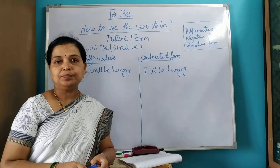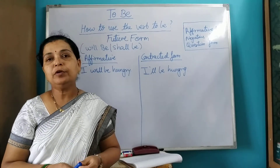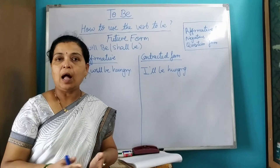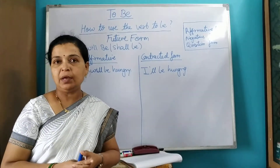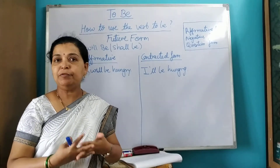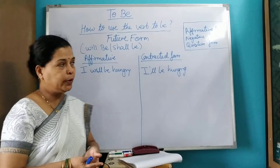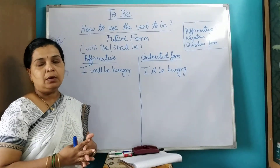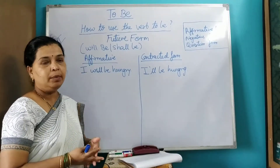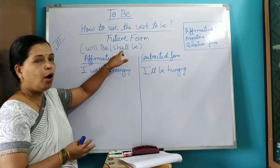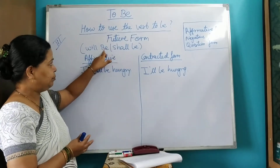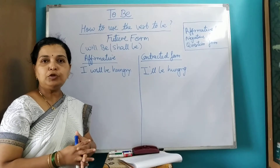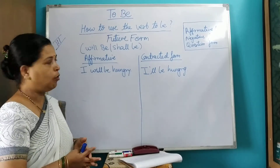Hello everyone, today we are going to see the verb 'to be' and how to use the verb 'to be' in the future form, in the future tense. We use the helping verb 'will' or 'shall' along with 'be' to form the future tense.